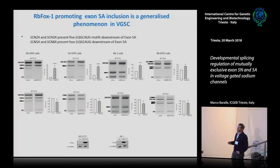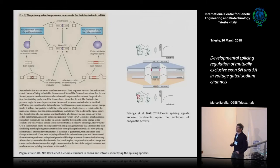We examined all the other channels — SCN2A and SCN3A had five of these FOX-binding motifs downstream of exon 5A, and SCN5A and SCN8A had four. We saw a similar pattern: knocking down FOX in SCN3A, for example, produced a significant decrease of the isoform containing exon 5A — again a generalized phenomenon across the sodium channel family.